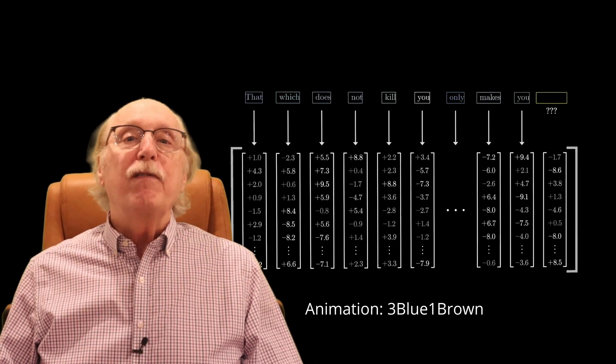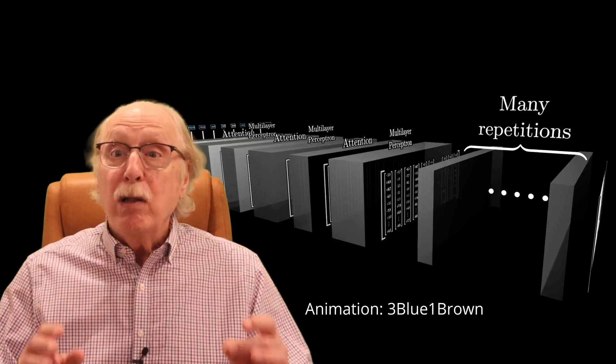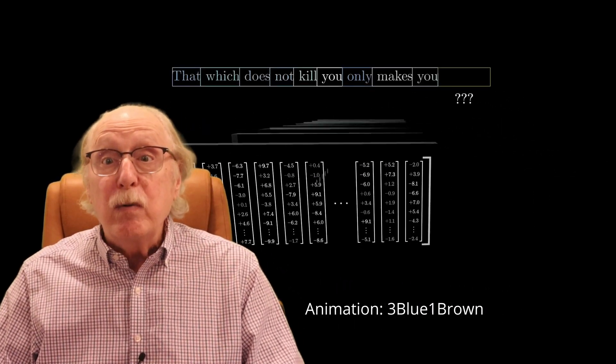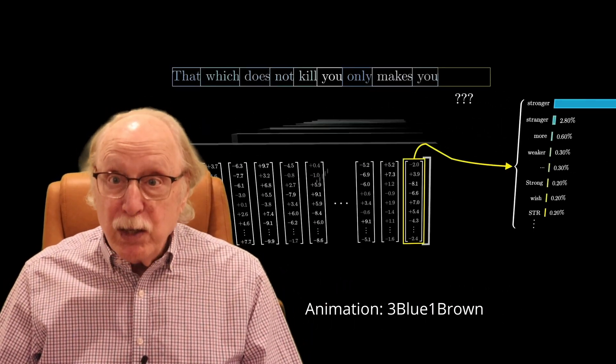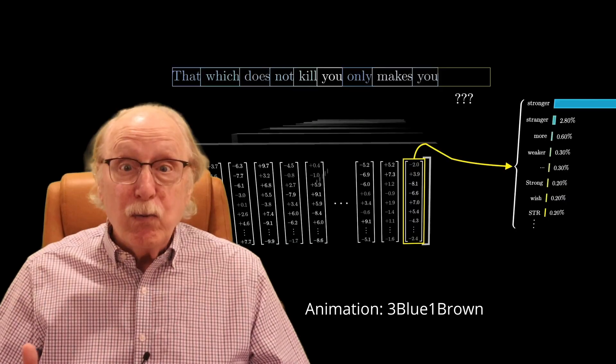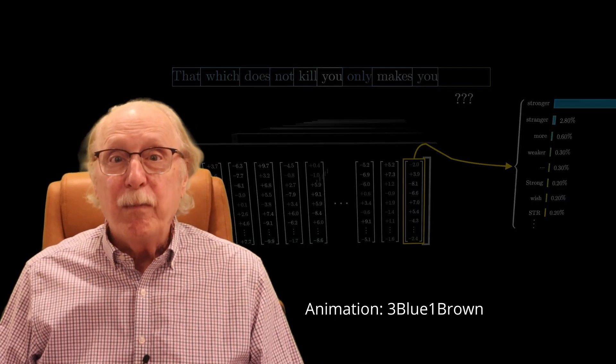With enough examples of intelligent human writing, the large language model can produce sequences of words which sound like intelligent human writing without understanding their meaning at all. And these truly vast training sets are at the heart of the AI energy crisis, which I'll circle back to later in this video.